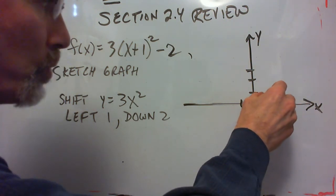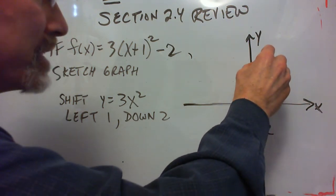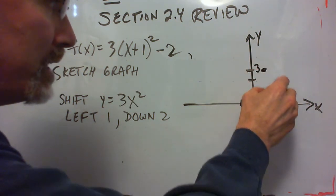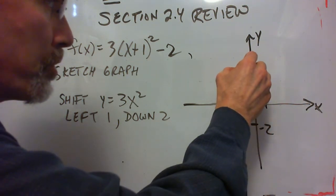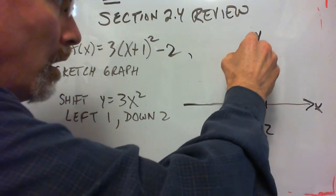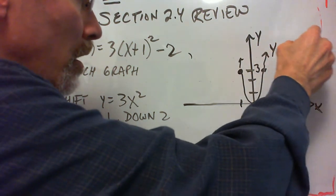3x squared is a stretch of x squared by a factor of 3. So instead of going up 1, over 1, up 1, we go over 1, up 3. So there's y equals 3x squared.